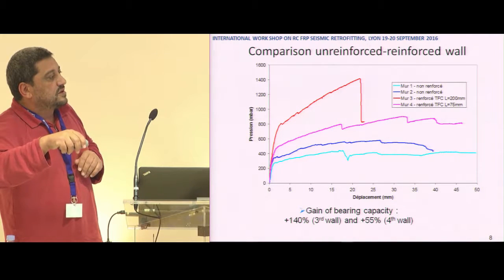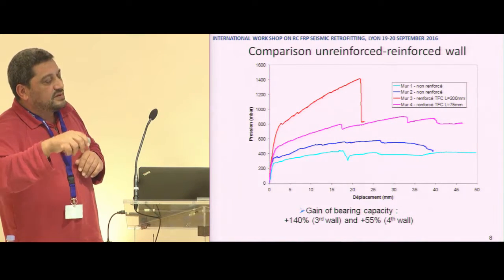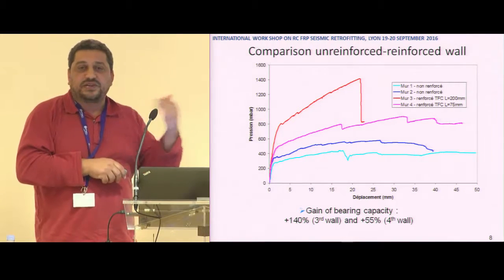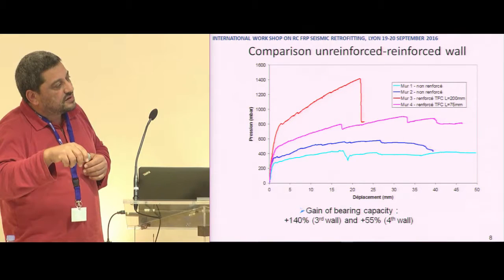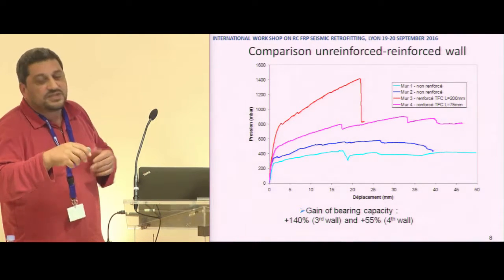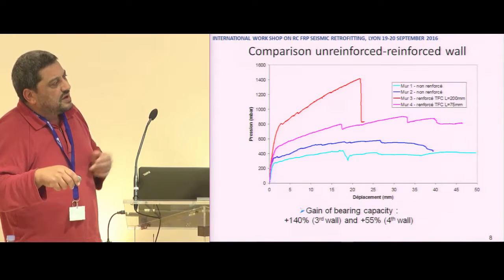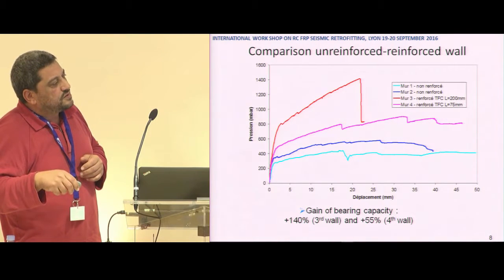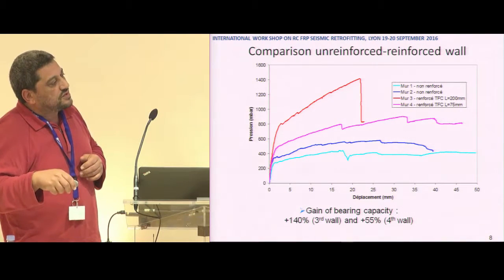With strong reinforcement, the initial crack appearance is really delayed — we have enhanced the initial crack load and we inhibit crack opening. However, the structure becomes more brittle. For the lighter reinforcement configuration, the gain is less but the structure is more ductile.